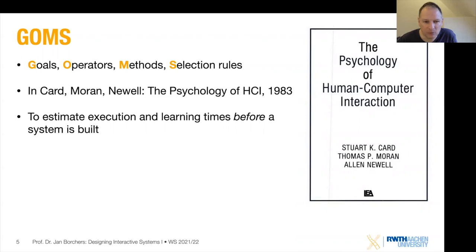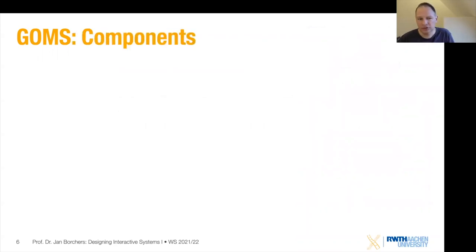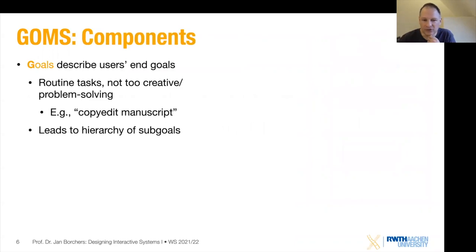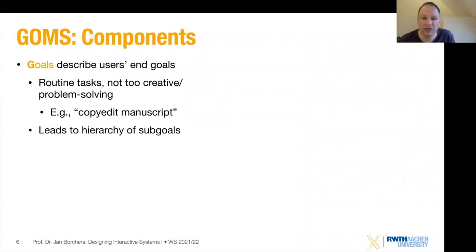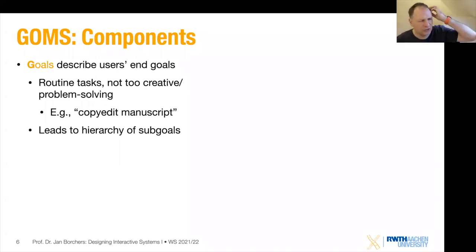What are those four components? Goals in GOMS describe the user's end goals — kind of like what you've seen in Norman's seven stages of action model. They are routine tasks, not too creative or problem-solving. This is a major characteristic of GOMS: it estimates how long somebody who is very familiar with the task takes to do it. It's not about struggling or scratching your head — this is about somebody who knows what they're doing, going about their business as fast as they can.